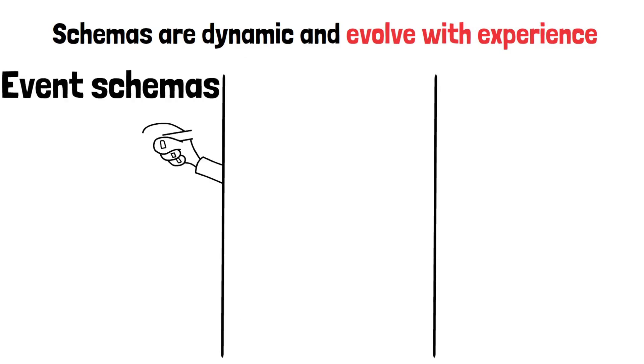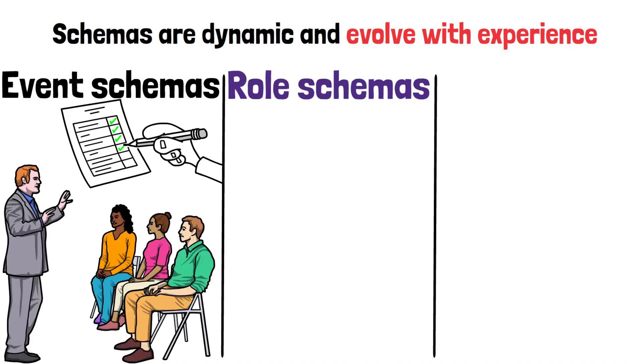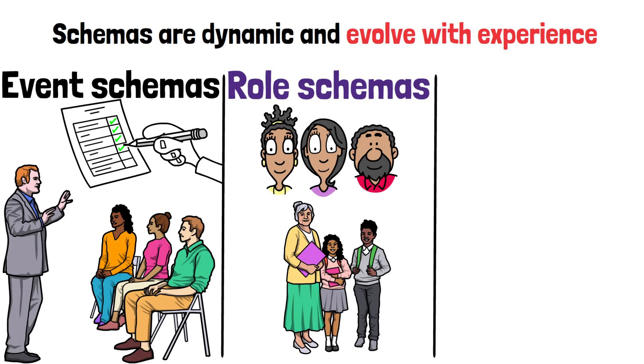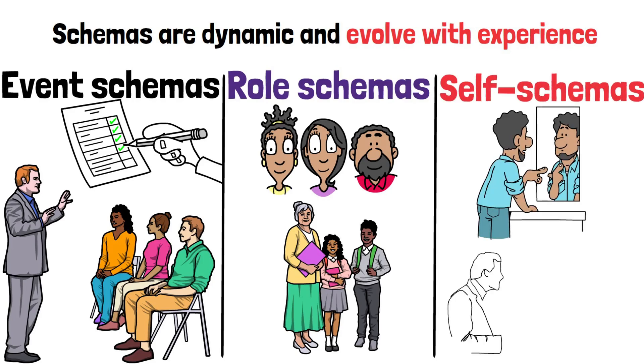Schemas are dynamic and evolve with experience. They are categorized into various types, such as event schemas (scripts for typical occurrences, like attending a lecture), role schemas (expectations of people's roles, like that of a teacher or parent), and self-schemas (one's perception of oneself, influencing behavior and self-esteem).